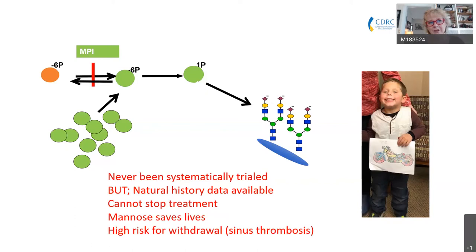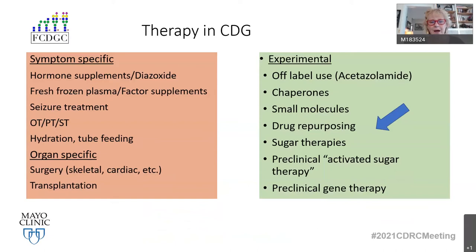However, this has never been systematically trialed. The disorder is one in a million, so most clinicians see only one patient in their life, even if they are specialists. We do have natural history data available, but it's scattered among individual physicians, and nobody dares to stop treatment to see if the clinical picture returns after washout, because the patient can die in a thrombotic episode. This is just an example of how difficult it is to start any clinical trial in this group.